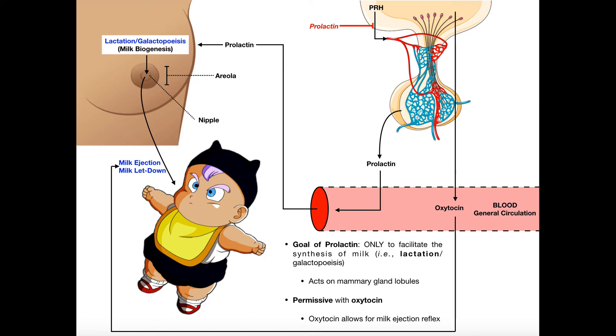In this video, we're going to be looking at the final hormone, that is the sixth hormone, that is released by the anterior pituitary gland, and that is the hormone prolactin.